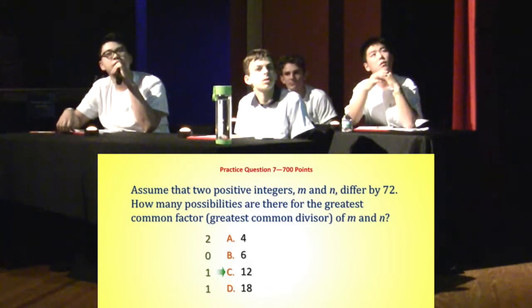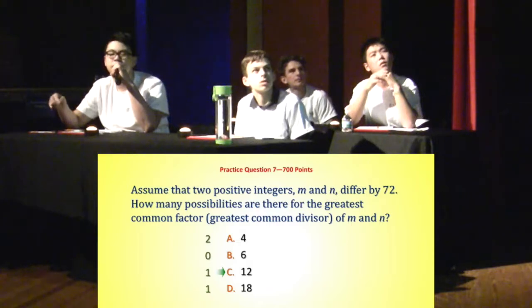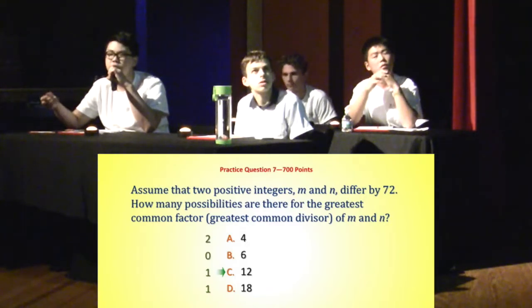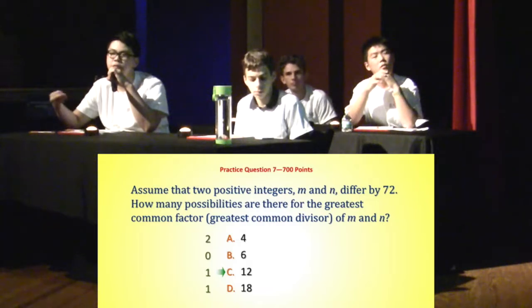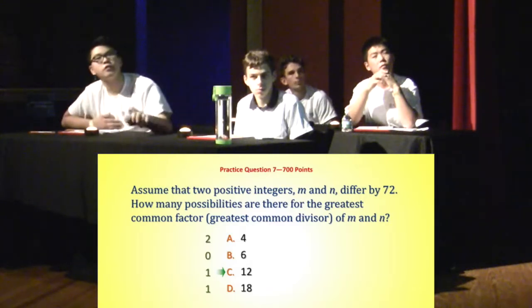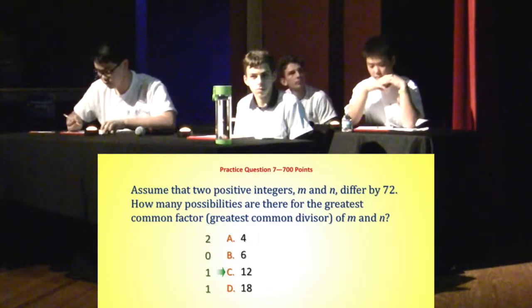Basically, 72 is equal to 3 squared times 2 cubed. So if we're going to build a factor, we're either going to use 3 squared, 3, or 1 — and either 2 cubed, 2 squared, 2, or 1 — so that's 4 times 3 factors for 72. Or you can write them out — that's 12. That's exactly right.